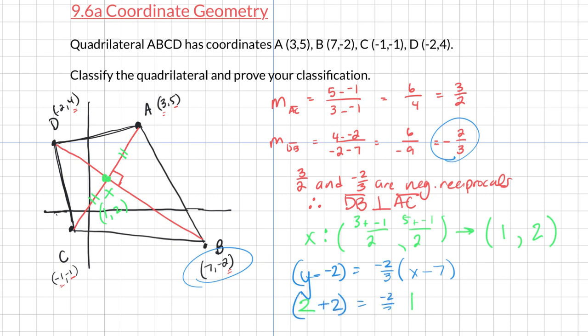Does that equal negative 2 thirds X times 1 minus 7? So let's see, that's 4. Does that equal negative 2 thirds times negative 6? That equals 12 over 3, which is indeed 4.